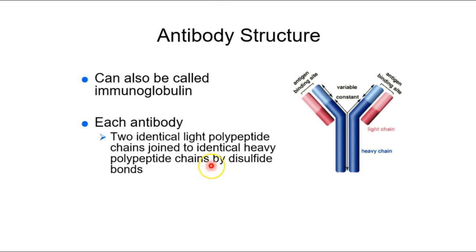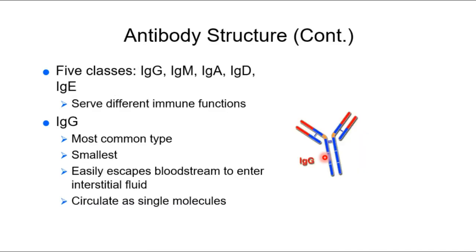When you secrete antibodies, those antibodies interact with antigens — they interact with the major histocompatibility complex. In our previous course we said plasma cells secrete antibodies and stopped there, and told you what antibodies were capable of. Now we need to grow that concept a little bit more.